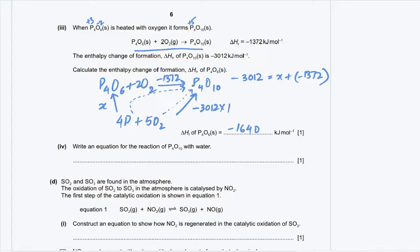Part C4: write an equation for the reaction of P₄O₁₀ with water. Phosphorus(V) oxide reacts with water to form phosphoric acid. Balancing gives 6 moles of H₂O and 4 moles of phosphoric acid.